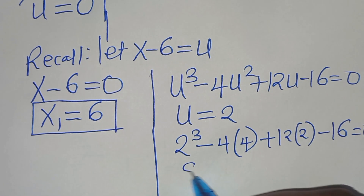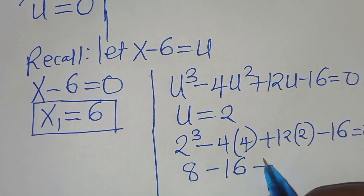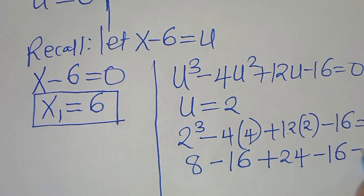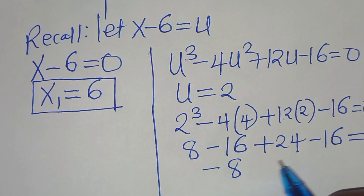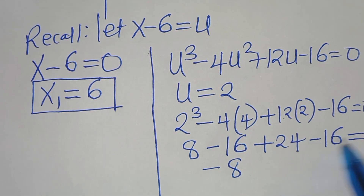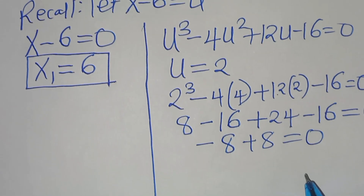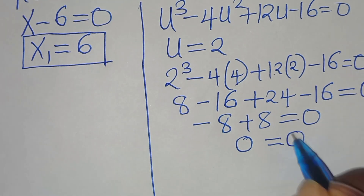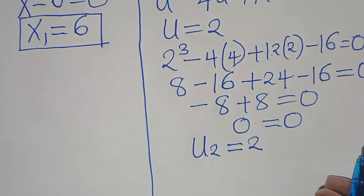Evaluating: 2 to the power of 3 is 8, minus 4 times 4 is 16, plus 12 times 2 is 24, minus 16. So 8 minus 16 is minus 8, plus 24 minus 16 is plus 8, giving minus 8 plus 8, which equals 0. This confirms that u₂ equal to 2 is the second root.